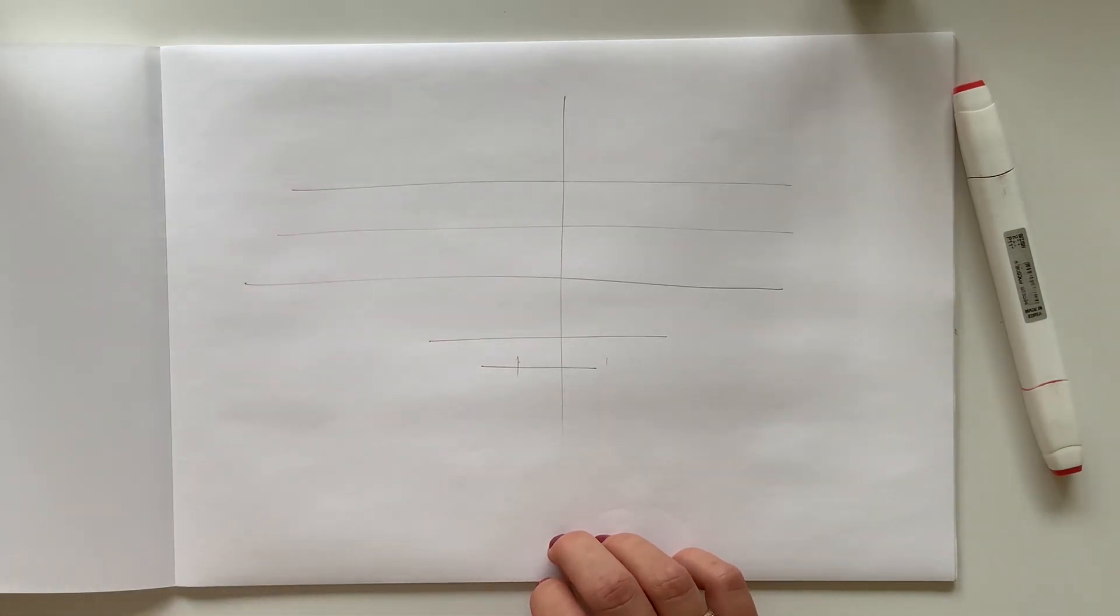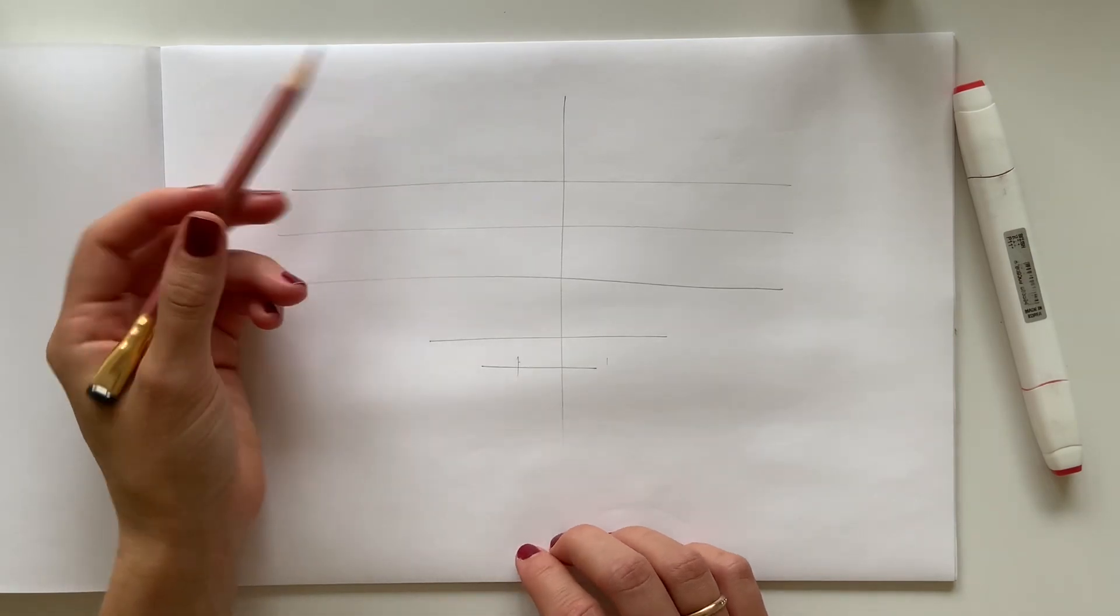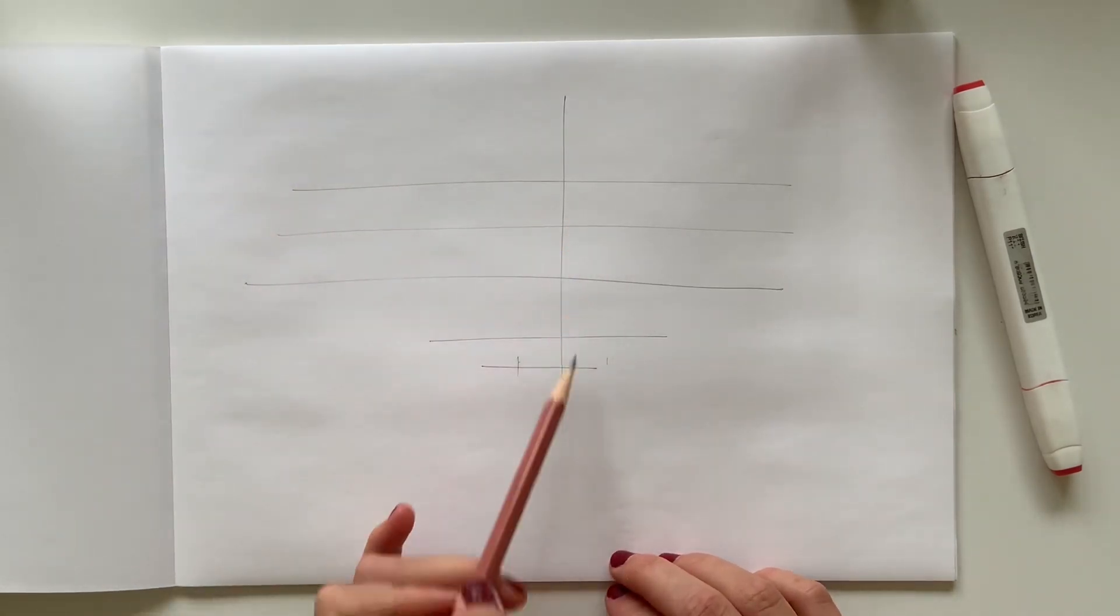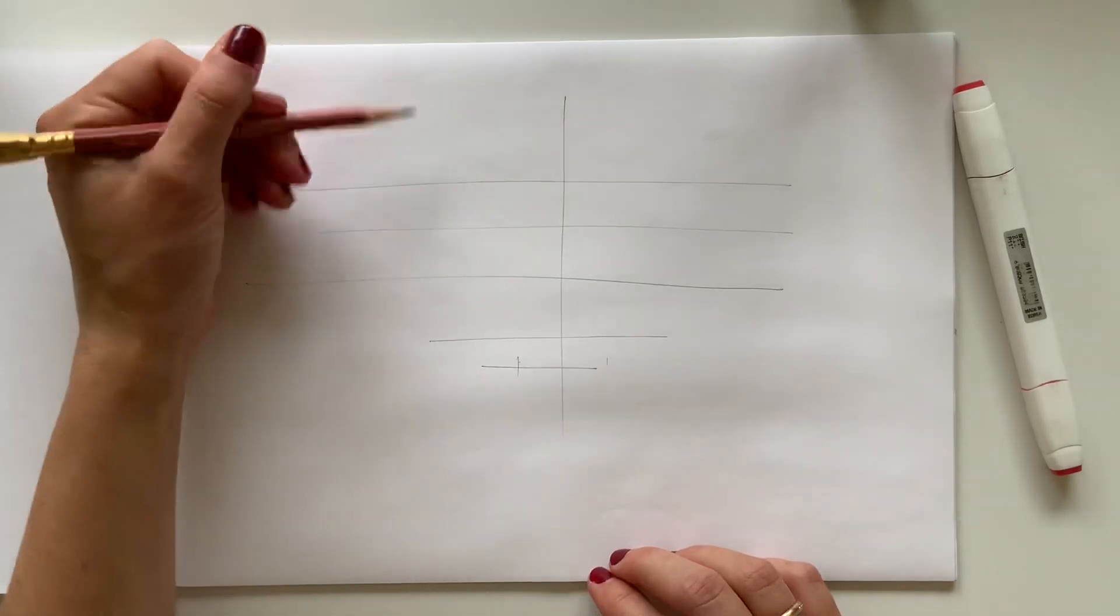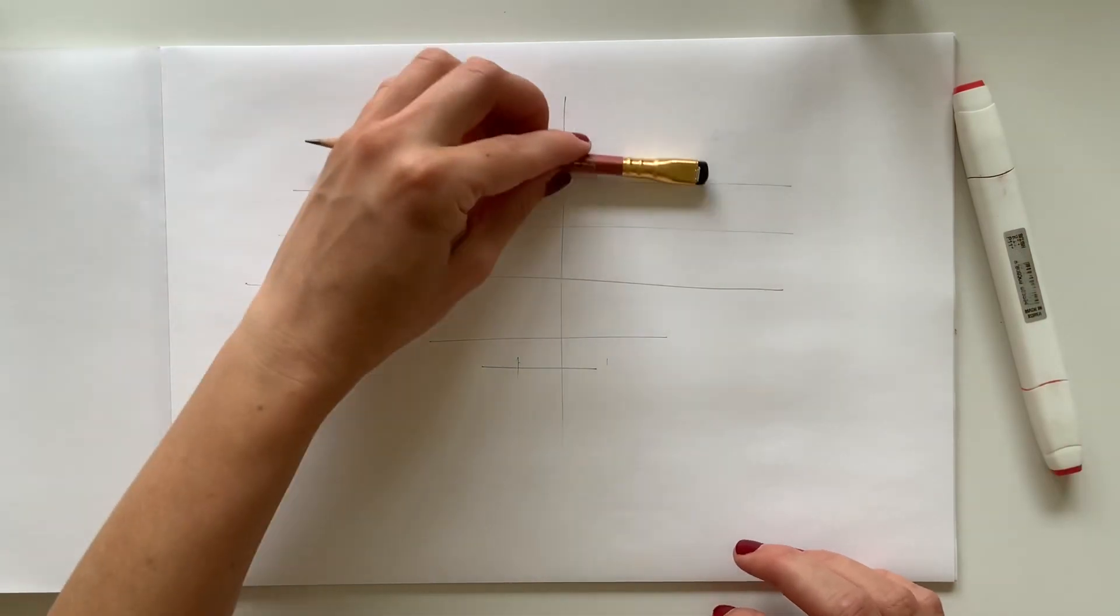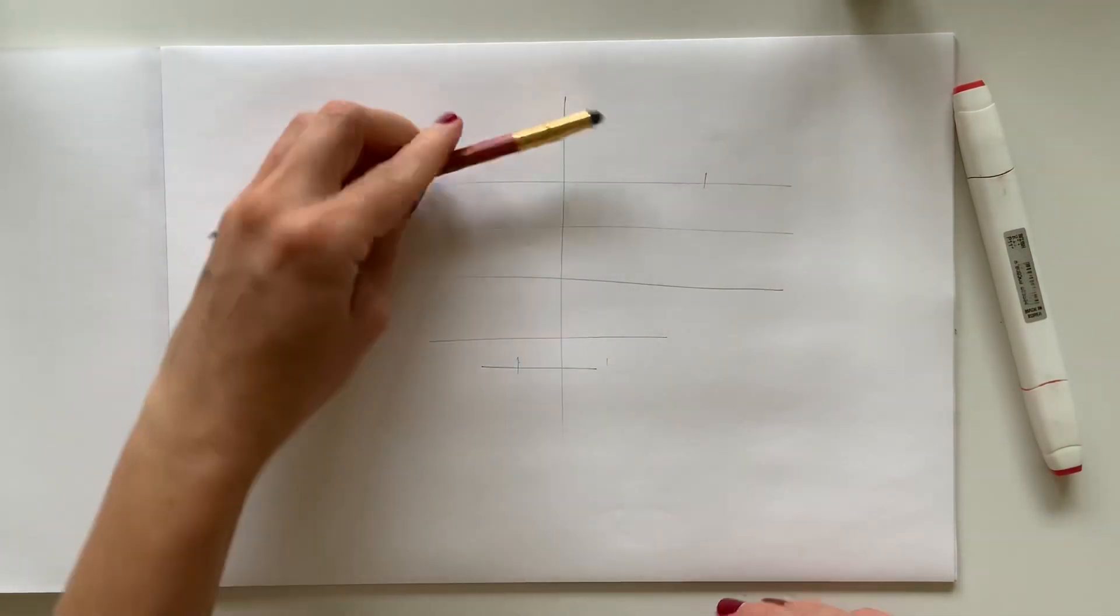So we draw a couple of guidelines. Then we want to help ourselves with the width. The top part will be approximately the same as the height, that means I need to make it a little bit shorter like that.